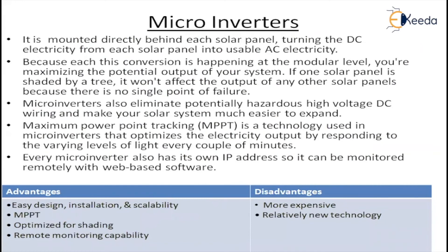Microinverters are mounted directly behind each solar panel, turning the DC electricity from each solar panel into usable AC. From the back of the solar panel junction box we get DC supply — if you put a microinverter, the panel directly gives you AC because each conversion is happening at the modular level. You are maximizing the potential output of your system. If one solar panel is shaded by a tree, it will not affect the output of any other solar panel — there is no single point failure. Microinverters also eliminate potentially hazardous high-voltage DC wiring, making the solar system much easier to expand. There is no requirement for high DC wiring systems.